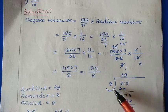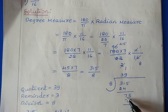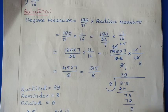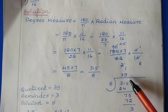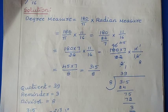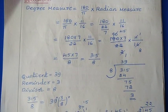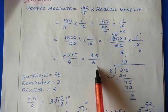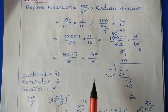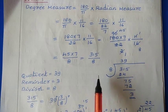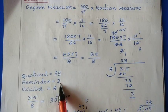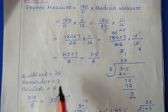Divide 315 by 8. 8 goes into 31 three times (24), remainder 7; bring down 5 giving 75. 8 goes into 75 nine times (72), remainder 3. So quotient is 39, remainder is 3, and divisor is 8. Now write this value in QRD form — that is quotient, remainder, and divisor form. Quotient is 39, remainder is 3, divisor is 8.